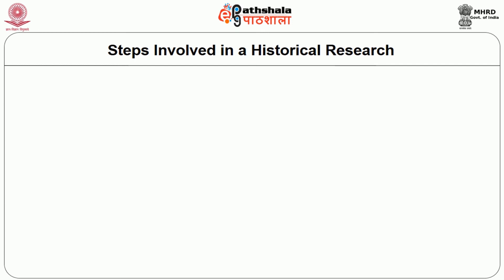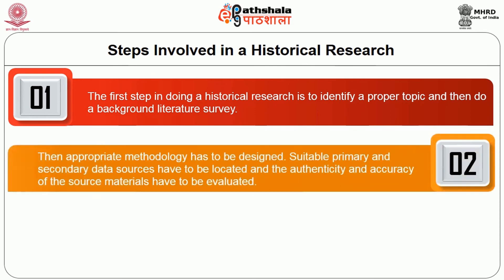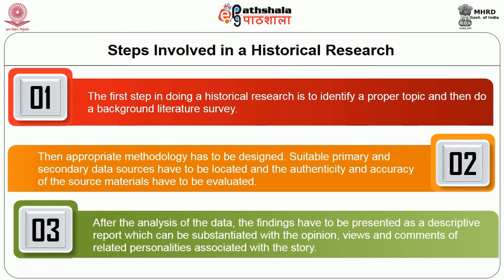What are the steps involved in historical research? The first step is to identify a proper topic and then do a background literature survey. Then appropriate methodology has to be designed. Suitable primary and secondary data sources have to be located, and the authenticity and accuracy of the source materials have to be evaluated. After analysis of the data, the findings have to be presented as a descriptive report which can be substantiated with the opinions, views, and comments of related personalities associated with the story.